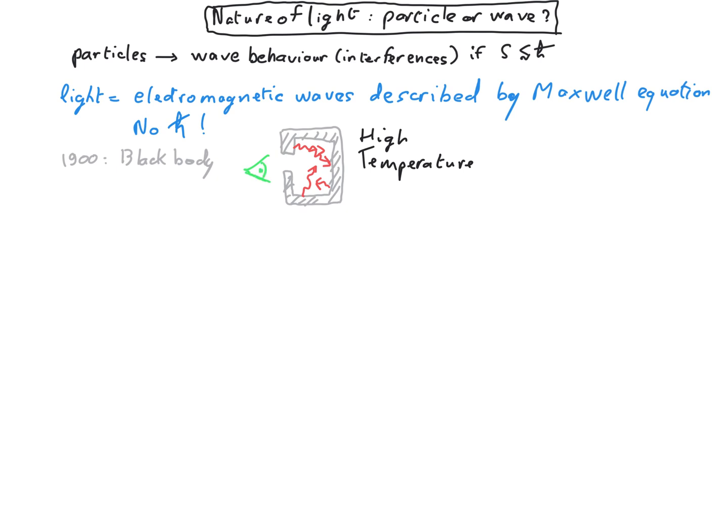Fine. People were interested to understand the behavior of the intensity of light as a function of the wavelength, as a function of the color for visible light. So they were doing measurements and theorists were trying to interpret these measurements.